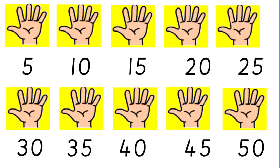Well done. Okay, number detectives — pause the video and tell someone at home: what are the only ones or units a number in the 5 times table will have? What do all numbers in the 5 times table, or all multiples of 5, end in — a what or a what? That's it, they always end in a 5 or a 0, and that's how you know it's a multiple of 5, which just means it's a number from the 5 times table.